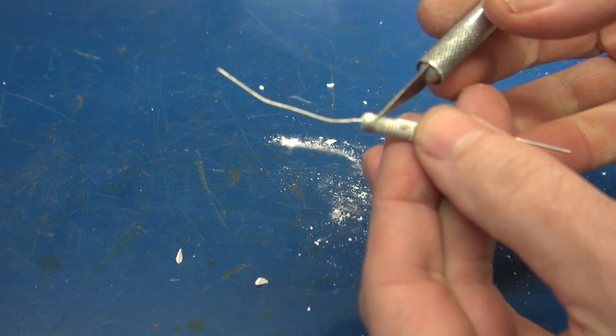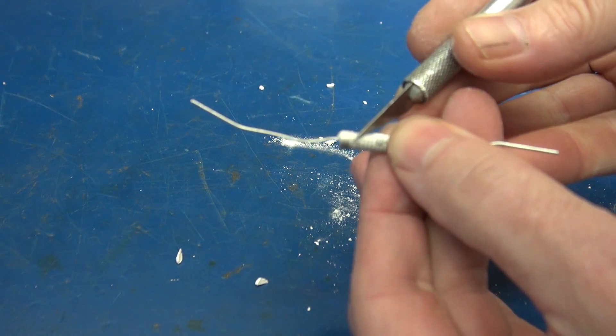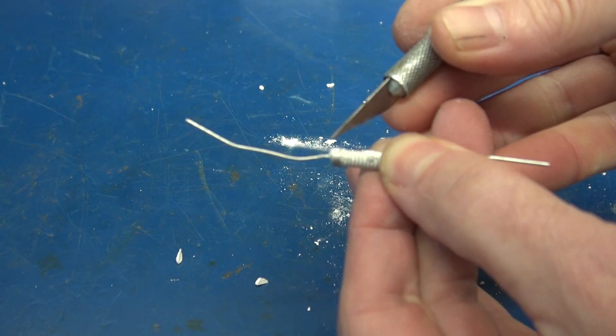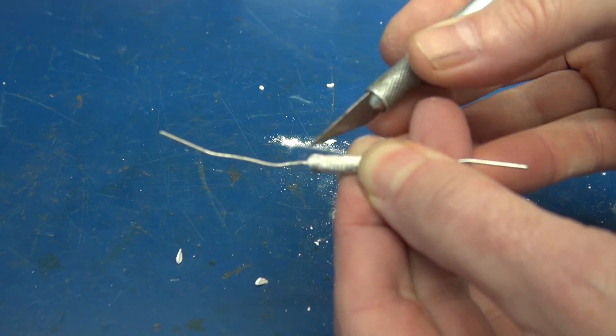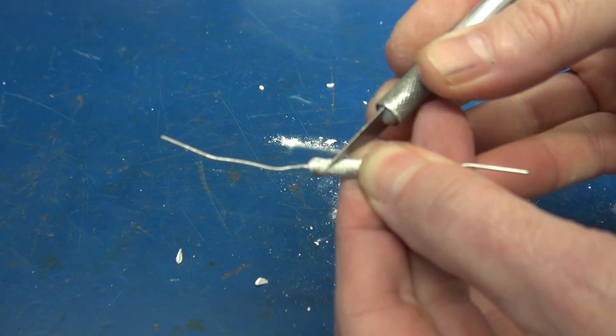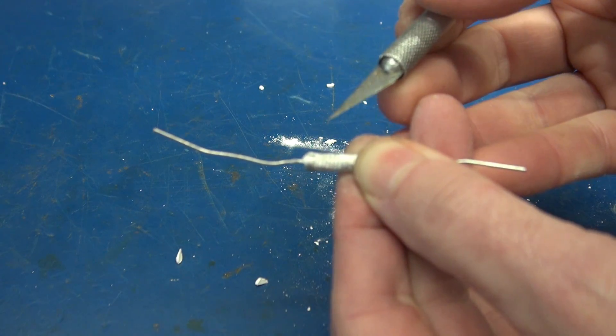So the wire they use for these resistors is nichrome. You can actually take an X-Acto knife, scrape that wire, and then you'll be able to solder to it.